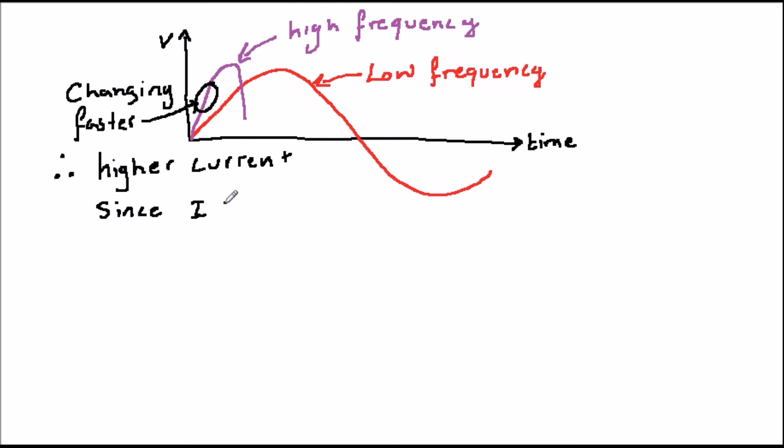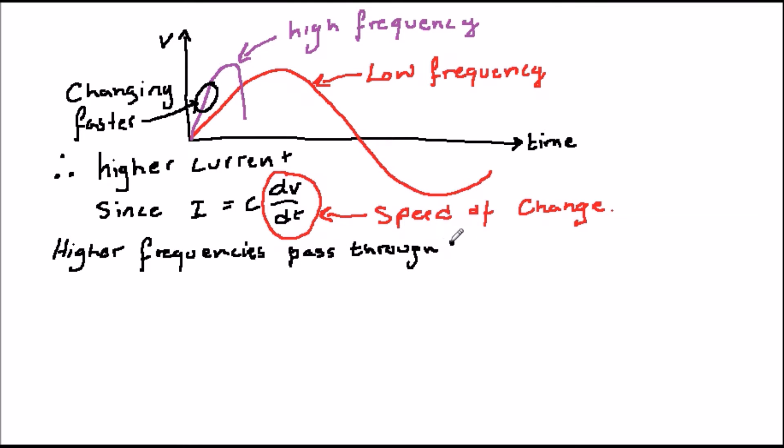So, a capacitor opposes the flow of current less and less at higher frequencies. This is a little bit like saying that it has a lower resistance at higher frequencies, but not quite, for reasons which will become clearer a little later.